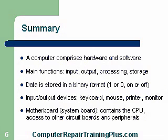In summary, we're going to summarize all of Chapter 1 Hardware. A computer comprises both hardware and software — we can't get the computer to do anything without the software. Main functions are input, output, processing, and storage. Everything connected to the computer includes input devices like keyboard and mouse, and output devices such as your monitor and printer. We do the processing through the CPU on the motherboard.